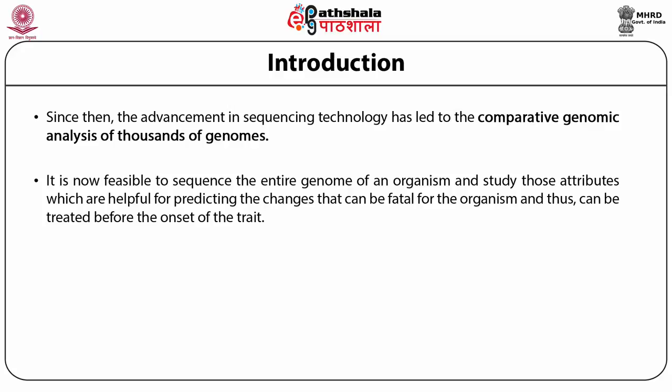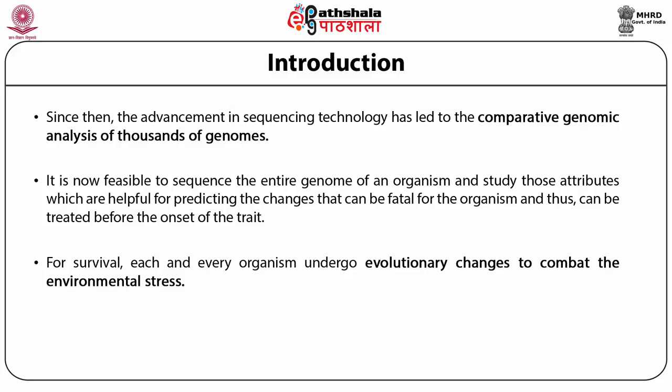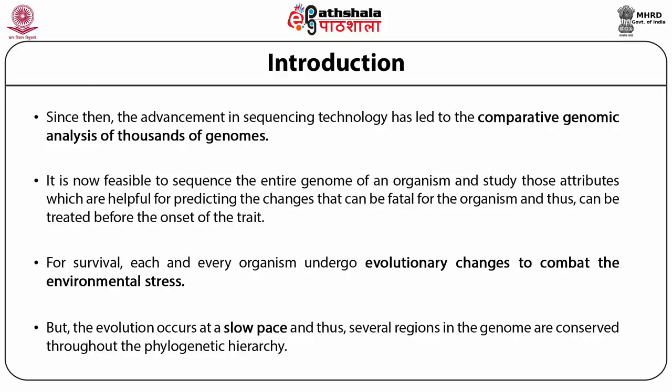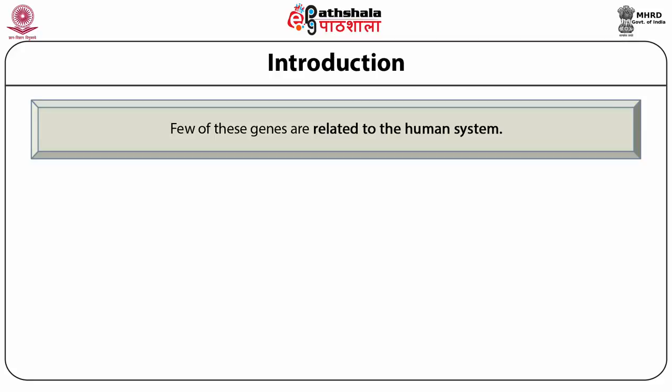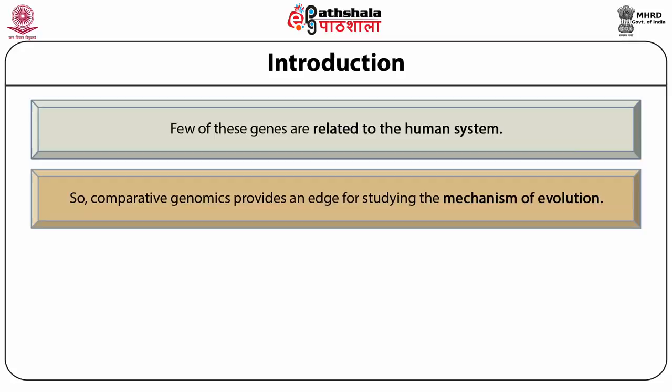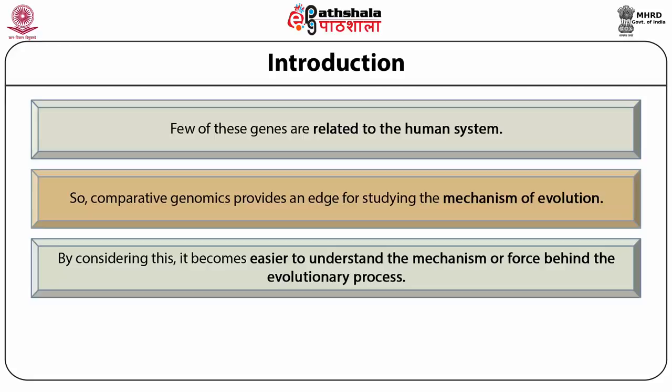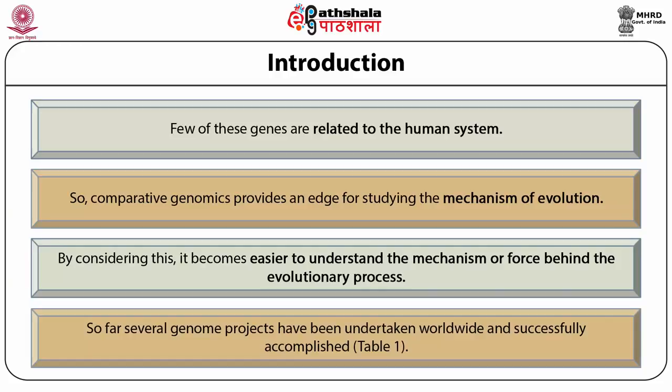It is now feasible to sequence the entire genome of an organism and study those attributes which are helpful for predicting the changes that can be fatal for the organism and thus can be treated before the onset of the trait. For survival, each and every organism undergoes evolutionary changes to combat environmental stress, but evolution occurs at a slow pace and thus several regions in the genome are conserved throughout the phylogenetic hierarchy. Few of these genes are related to the human system, so comparative genomics provides an edge for studying the mechanism of evolution.